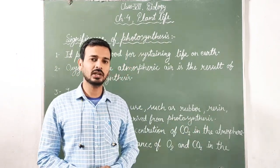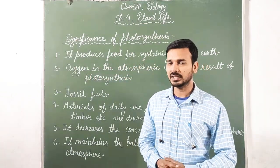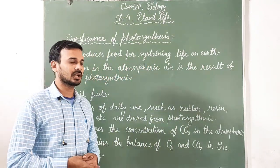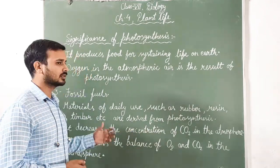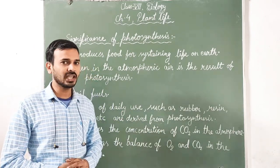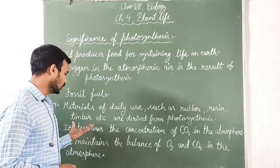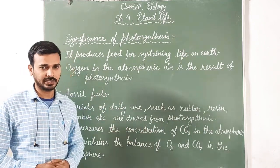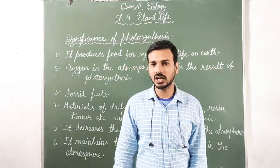Point five: photosynthesis decreases the concentration of carbon dioxide in the atmosphere. Carbon dioxide is a greenhouse gas, and a rise in its concentration can create pollution. To decrease CO2, plants do photosynthesis — they utilize carbon dioxide to produce food and oxygen, which are important and essential. This maintains the balance of oxygen and carbon dioxide in the atmosphere.